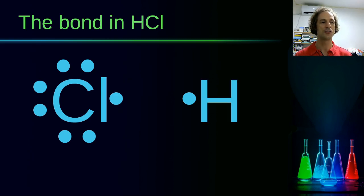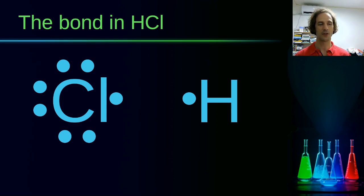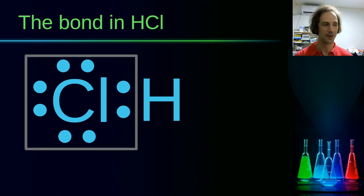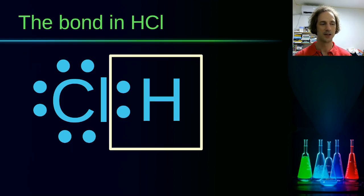If we consider hydrogen chloride, hydrogen only has one electron, but since it is in the first period — along with helium — it has a fully filled electron shell with just two electrons. So hydrogen's lone electron pairs up with the lone electron from the chlorine atom, giving chlorine its octet structure and giving hydrogen the two electrons it needs to fill its valence shell.